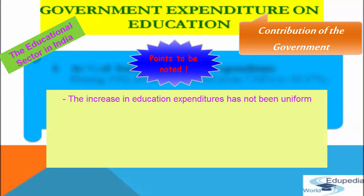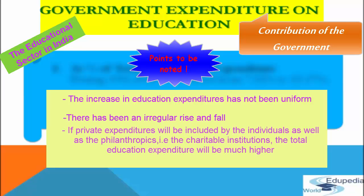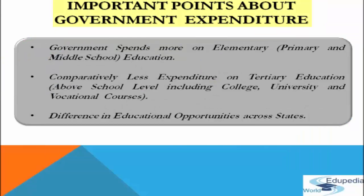During 1952 to 2002, education expenditure as a percentage of GDP increased from 0.64% to 4.02%. The increase has not been uniform — there has been an irregular rise and fall. However, if we include private expenditure incurred by individuals and by philanthropic (charitable) institutions, the total education expenditure will be much higher.